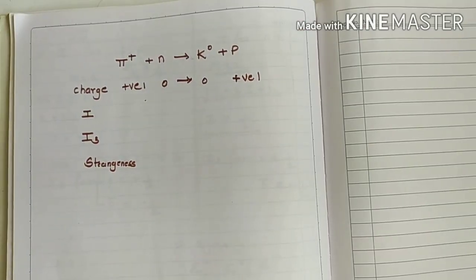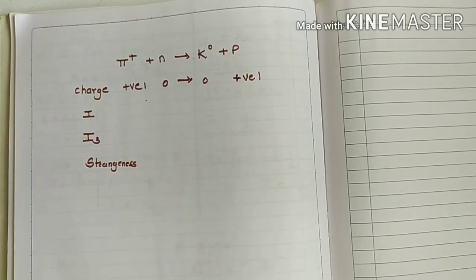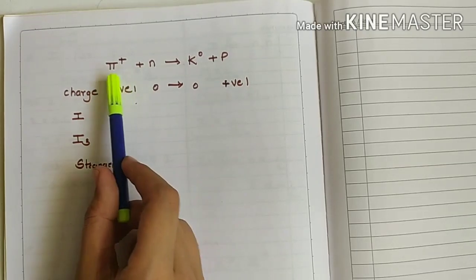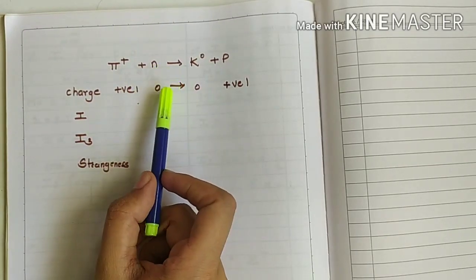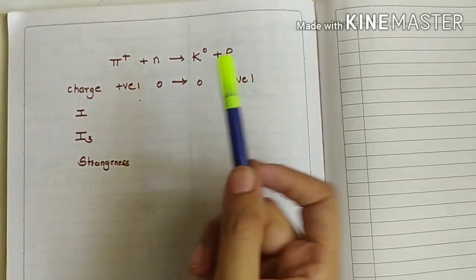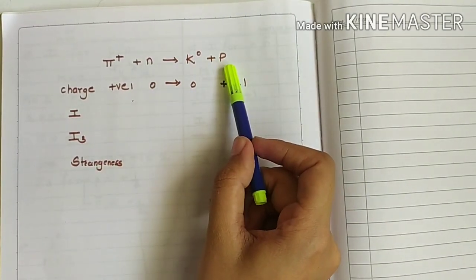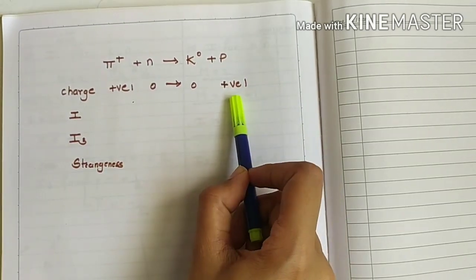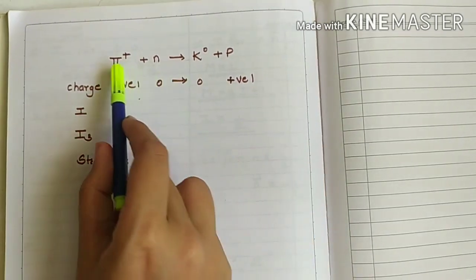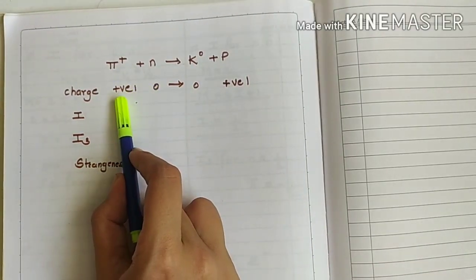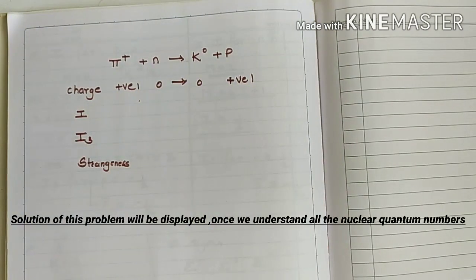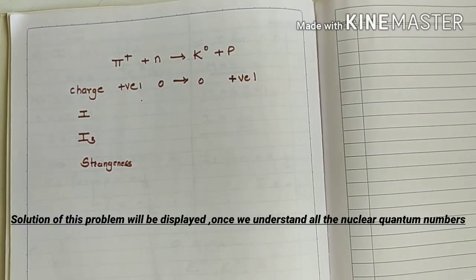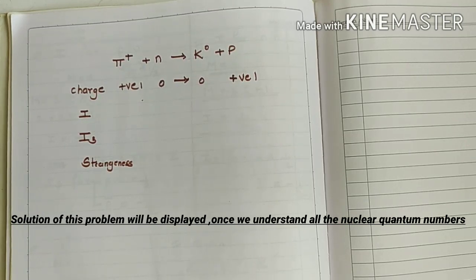This is the reaction that we saw in the problem. First we will check the validity of the reaction for charge. Pi positive would have positive 1 charge. Neutron is neutral so charge would be 0. K0 also has charge 0 and proton has positive 1 charge since it is positively charged. For this reaction, on the LHS we have positive 1 charge and on the RHS we have positive 1 charge. Since equal charges are on both sides, we say this reaction is valid under the conservation of charge.